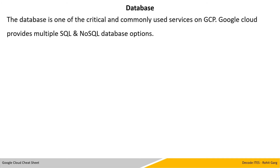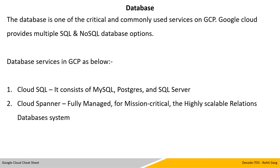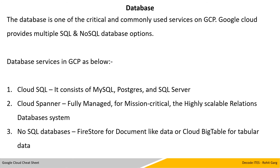Database service: The database is one of the critical and commonly used services on GCP. Google Cloud provides multiple SQL and NoSQL options. Database services in GCP include Cloud SQL, which consists of MySQL, Postgres, and Microsoft SQL Server; Cloud Spanner, a fully managed solution for mission-critical and highly scalable relational database systems; and NoSQL options — Firestore for document-like data and Cloud Bigtable for tabular-like data.